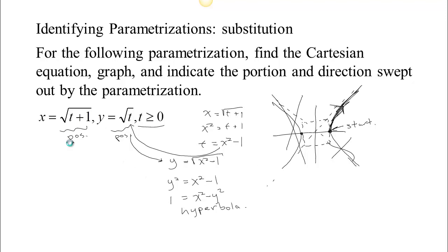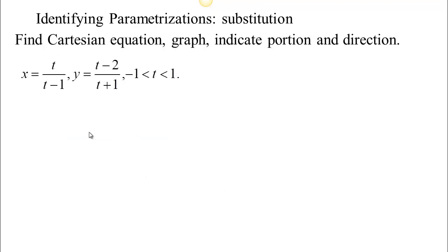Let's look at another example. Here's one we can solve by substitution. Again, our plan is to solve for one of the variables and then plug that into the other equation. We're going to solve for T and then plug that into the other equation so that we get an equation that relates X and Y. An equation that relates X and Y is your typical Cartesian equation. We'll know then that every point lies somewhere on that graph and then we'll just have to identify which portion of the graph and which direction we're moving in.